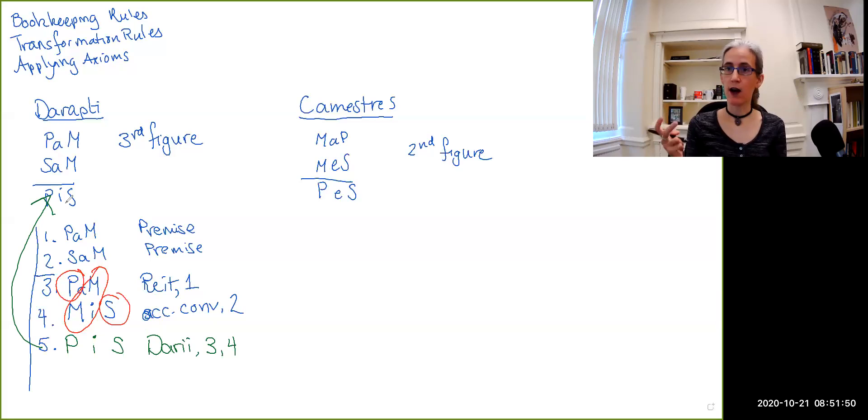So from the assumption of PaM and SaM, using the rules of transformation, the bookkeeping rules, and the axioms, I was able to derive the conclusion PiS, which is exactly what we wanted. Hooray! Can we do it again with Camestres?